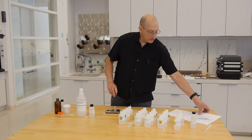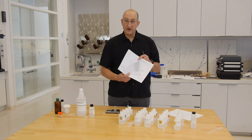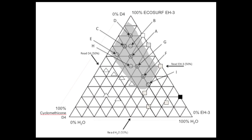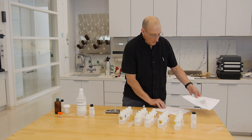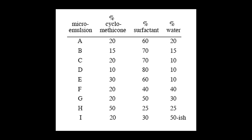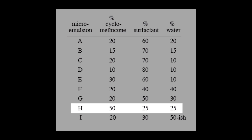Now we'll use our phase diagram, or more conveniently, a tabular form. We'll be making microemulsion H on the phase diagram, which is 50% cyclomethicone, 25% ECOSURF EH3, the surfactant,